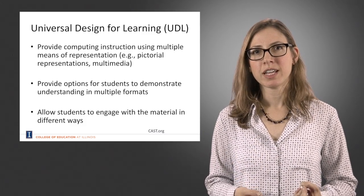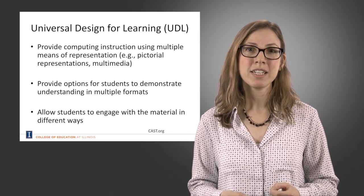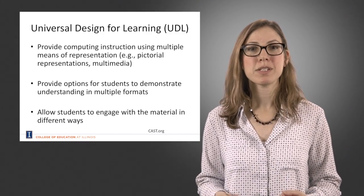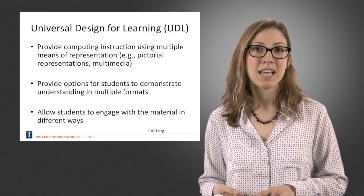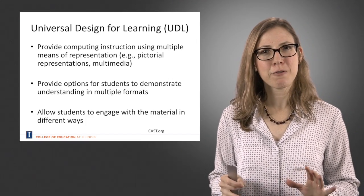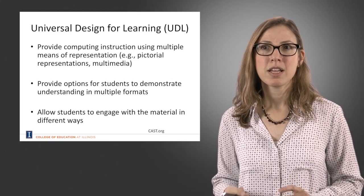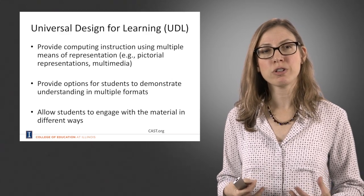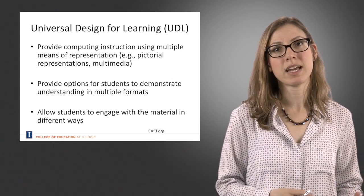Universal design for learning is an instructional planning approach that allows teachers to proactively plan for a wide range of variability of students in their classroom. It assumes that students come to the classroom with different backgrounds, different skills, and different challenges. It's based on neuroscience, and although this is an oversimplified way of looking at it, it assumes that there are three learning networks. The recognition network is the "what" of learning — kids are going to learn information in different ways, so we want a flexible way of presenting that information.